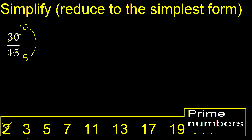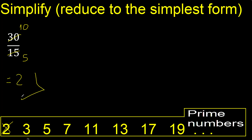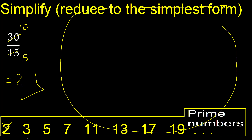10 can be divided by 5 — 10 divided by 5 is 2. Finished. More examples here.